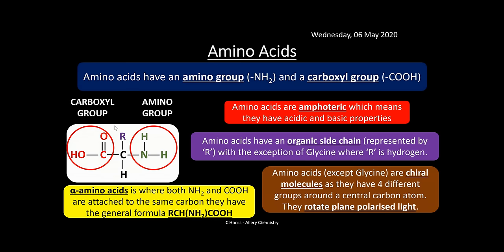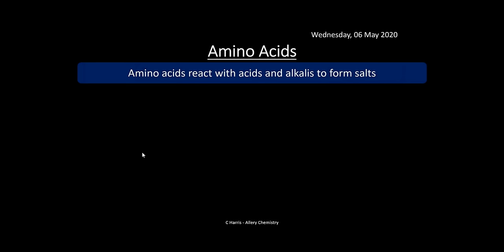The examples you need to know for OCR are alpha amino acids. An alpha amino acid is where the NH2 and the carboxyl group are attached to the same carbon, with no other carbons in between. They always have the general formula RCH(NH2)COOH.